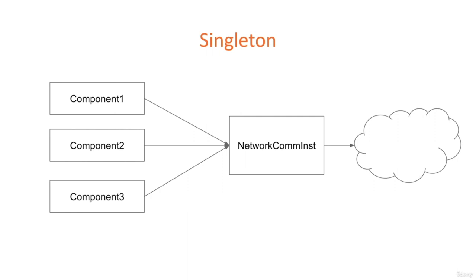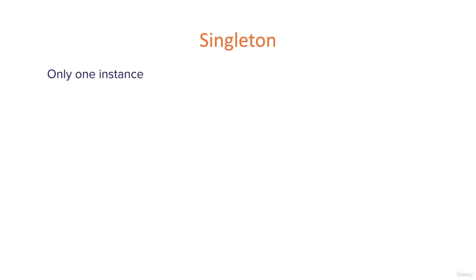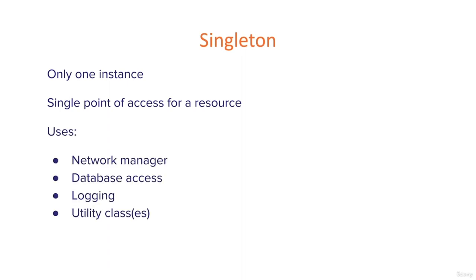Put a central resource in a single instance of that resource rather than duplicating it multiple times. Only one instance — it's a single point of access for a resource. We've taken the example of a network communicator, but we might have a database, a logging system, or things like that where you want a single resource. Here are a few examples, but of course it's not limited to that.